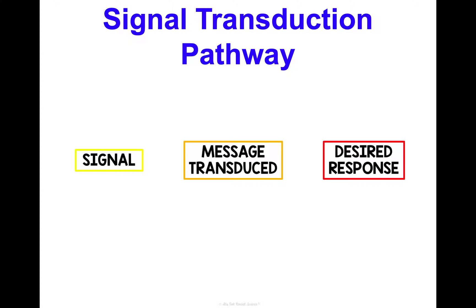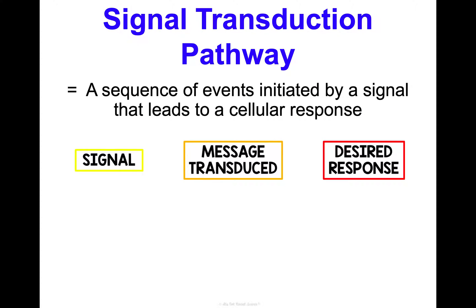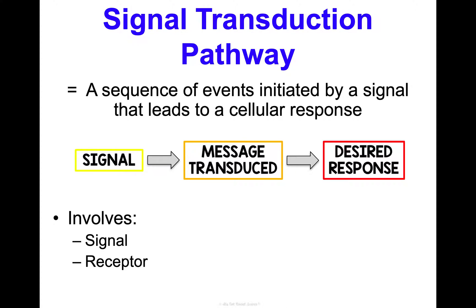So a signal transduction pathway — what is that? It's a sequence of events initiated by a signal that leads to a cellular response. Our environmental or chemical stimuli, whatever it may be, initiates a signal. That signal transduces a message that gets passed along a pathway until the desired response gets initiated. To oversimplify this, there are three parts: your signal, whatever's receiving your signal called the receptor, and then the response.